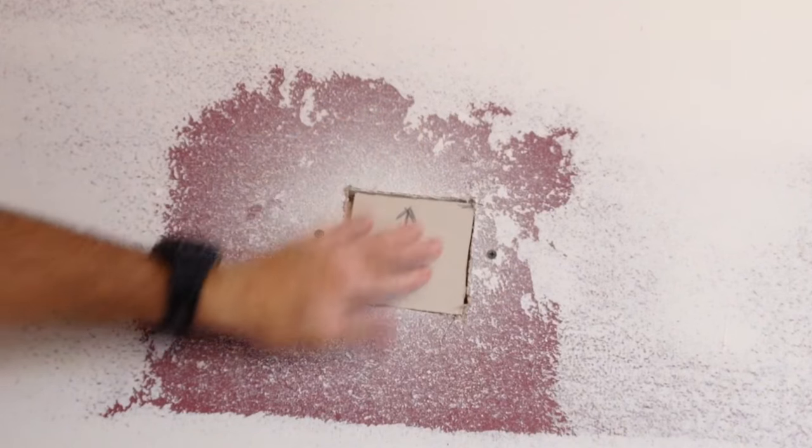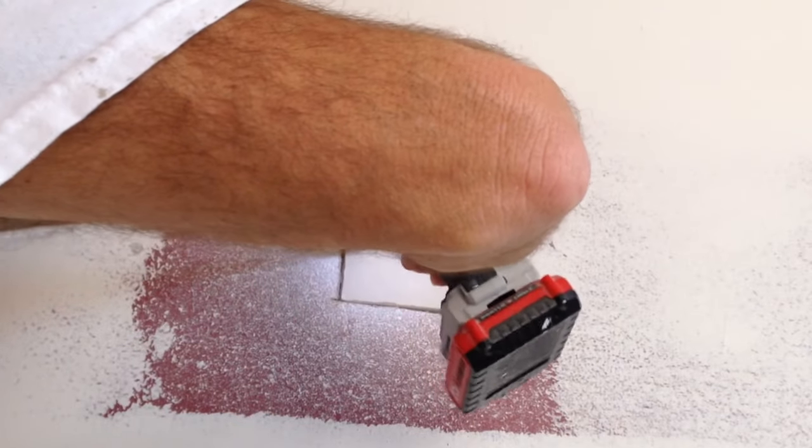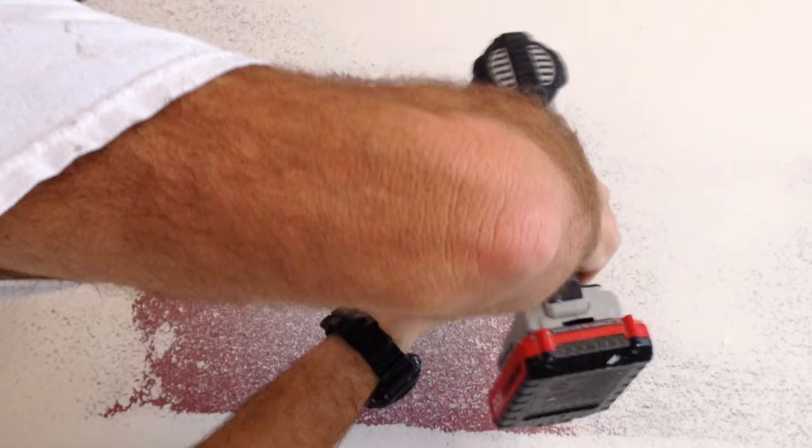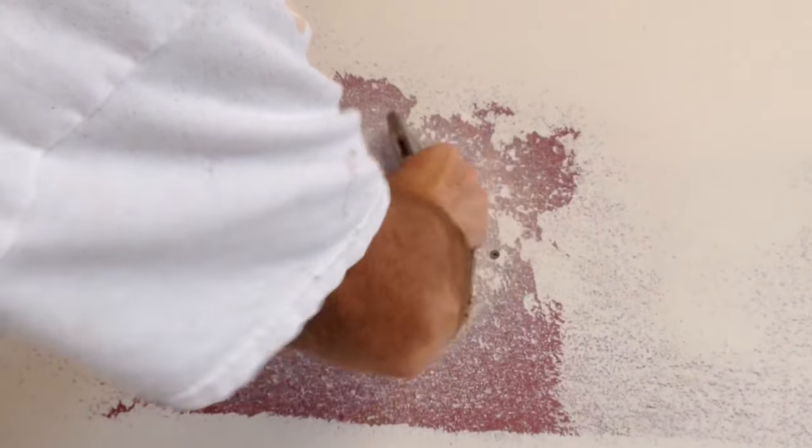Now you can see I put an arrow on the little piece of drywall so I know exactly how I traced it. Then you just want to attach it using inch and a quarter screws. Make sure there's no paper sticking up.